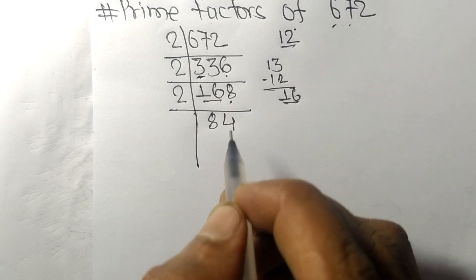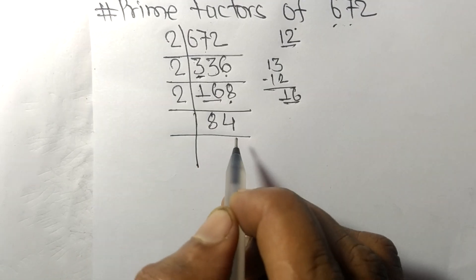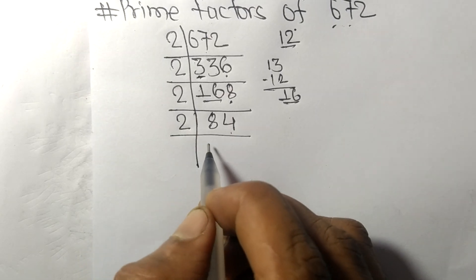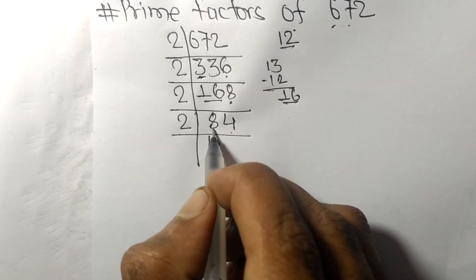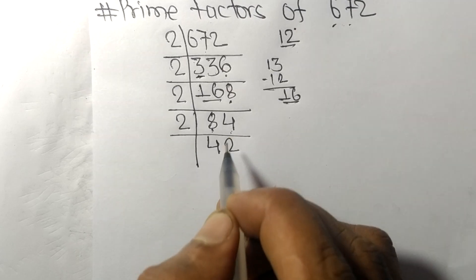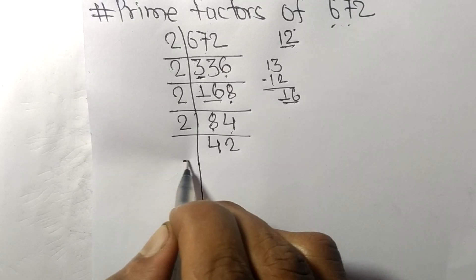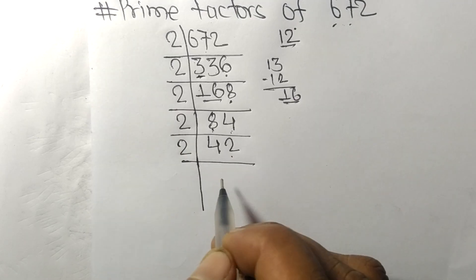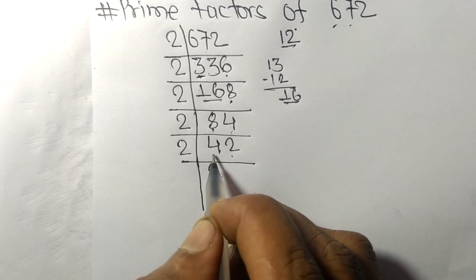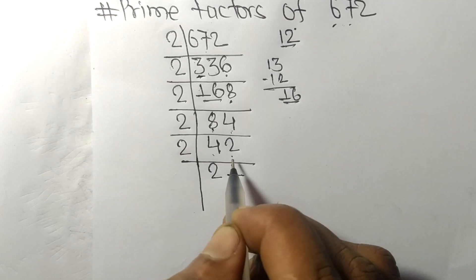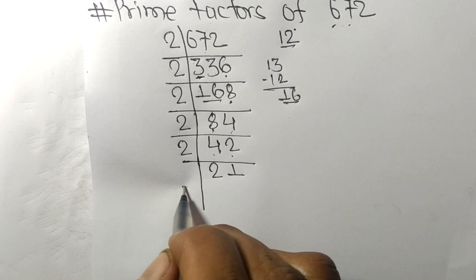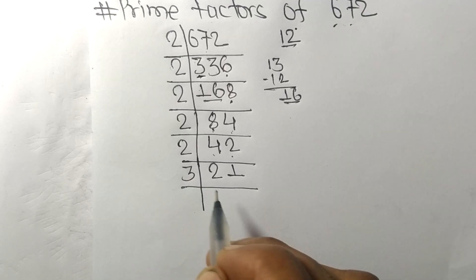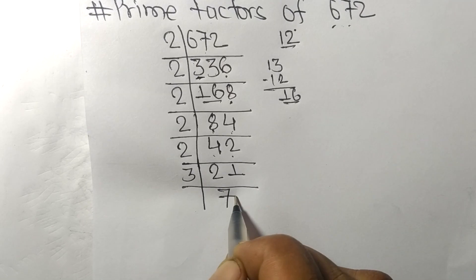Again even number four at last, so divisible by two. Two times four means eight, two times two means four. Again even number two, so divisible by two. Now we have twenty-one, which is exactly divisible by three. Three times seven means twenty-one.